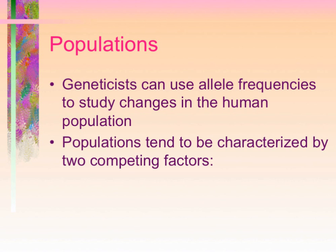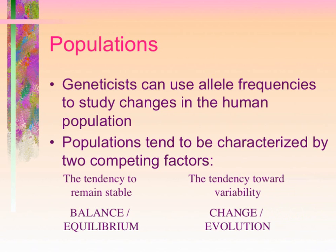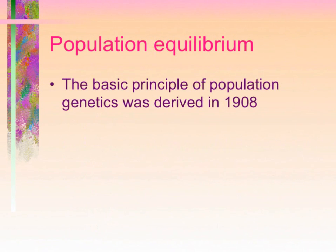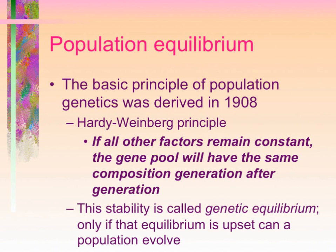A population tends to be characterized by two competing factors: the tendency to remain stable — to keep the population in a state of balance or equilibrium — and the tendency toward variability, the capacity to change or evolve. The basic principle of population genetics was derived in 1908 independently by two individuals who developed a mathematical equation to describe a population at equilibrium, since called the Hardy-Weinberg principle. If all other factors remain constant, the gene pool will have the same composition of alleles generation after generation. This stability is called genetic equilibrium, and only if that equilibrium is upset can a population evolve.